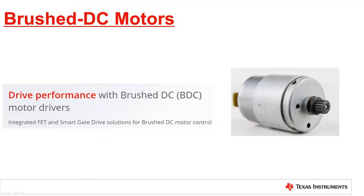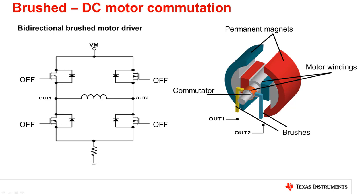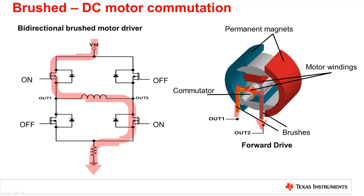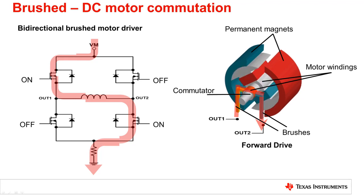The first motor type we will look at is the Brush DC motor. Using a Brush DC motor is one of the simplest ways to move a load. For the purposes of this video, we will consider a bi-directional permanent magnet Brush DC motor, which can be controlled using an H-bridge. By turning on a high-side and low-side MOSFET, we create a current path through the OUT1 and OUT2 terminals. Current is then passed through the commutator and motor windings of the rotor, creating a magnetic field around the rotor.